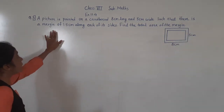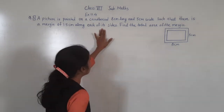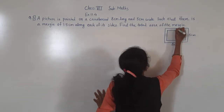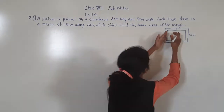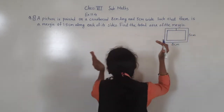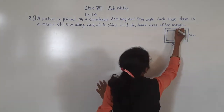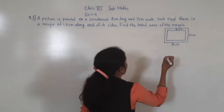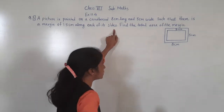Such that there is a margin of 1.5 cm along each of its sides. See this margin — what is given? The picture is painted on a cardboard, and the margin is 1.5 cm. This measurement is 1.5 cm along each of its sides.